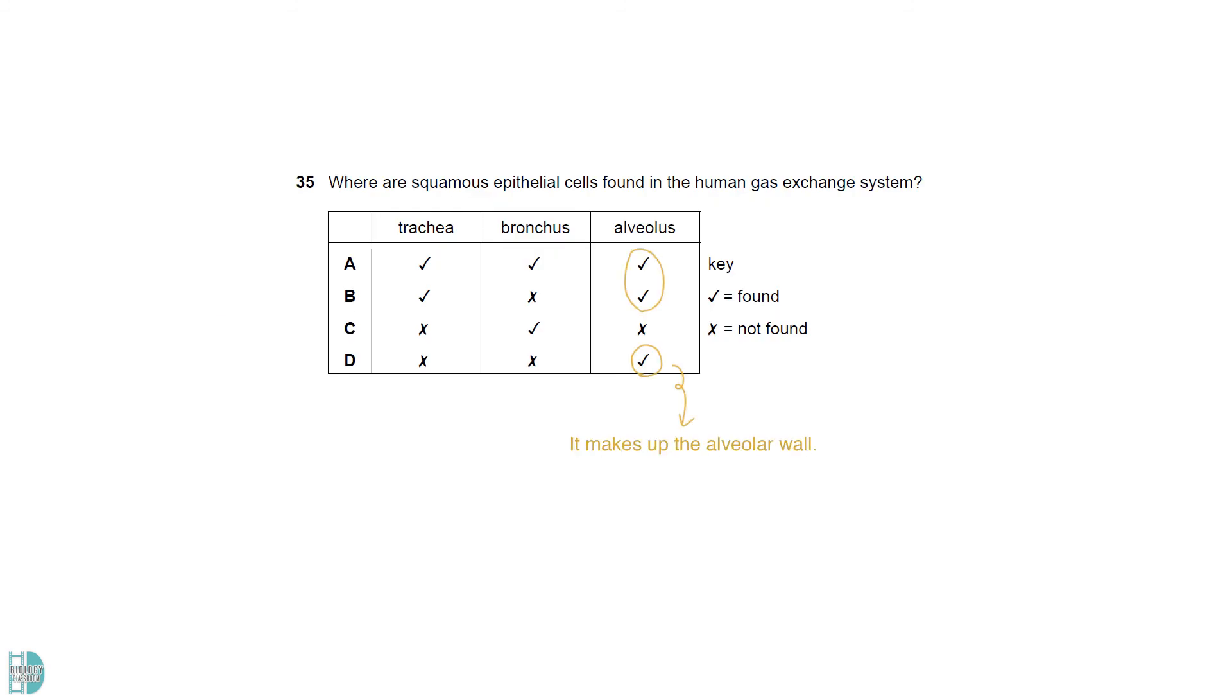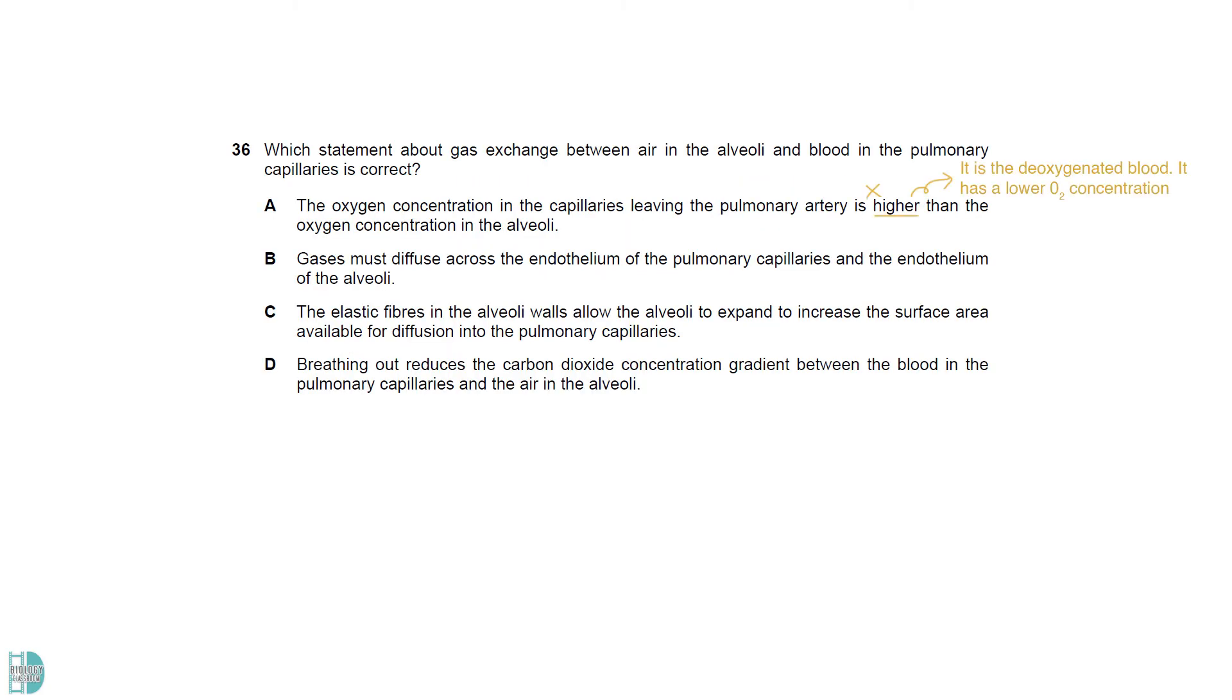Squamous epithelial cells are the flattened cells which form the alveolar wall. The epithelium of both the trachea and bronchus consists of the ciliated epithelial cells. A is wrong because the blood leaving the pulmonary artery is the deoxygenated blood. It has a lower oxygen concentration compared to the alveoli. B is incorrect as the wall of the alveoli is not endothelium. The term endothelium is only used for blood vessels. C is a correct description of how the elastic fibers help with gas exchange. D is wrong because breathing out should remove carbon dioxide in the alveolar air, causing a greater concentration gradient.